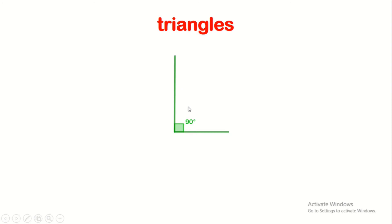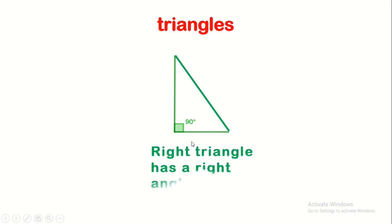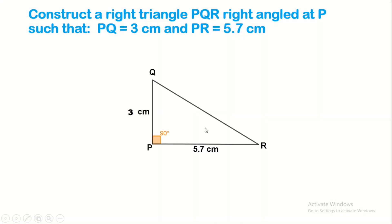Now let's look at right triangles. A right triangle has a right angle of 90 degrees. The side that faces the right angle is called the hypotenuse. This is a very important term to remember.